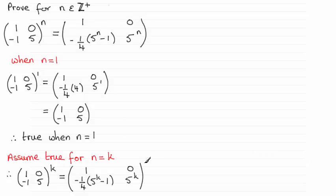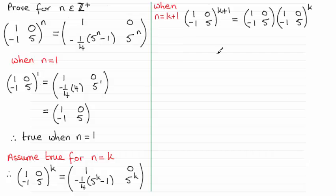Now we need to work on this assumption and prove that it would be true for n equals k plus 1. So that's the next step. We set up when n equals k plus 1, and so we've got [1, 0; -1, 5] to the power k plus 1, and we've got to use this result here somehow.